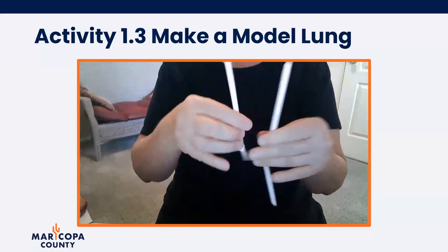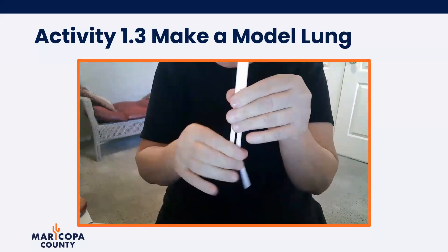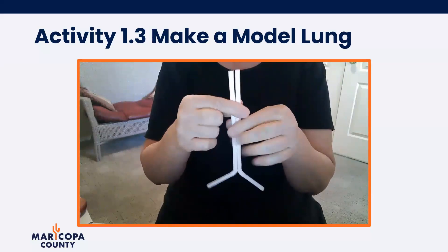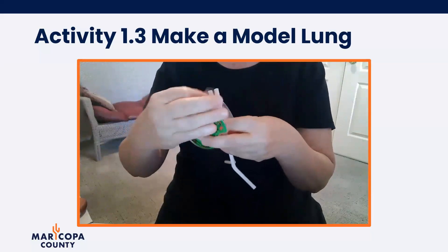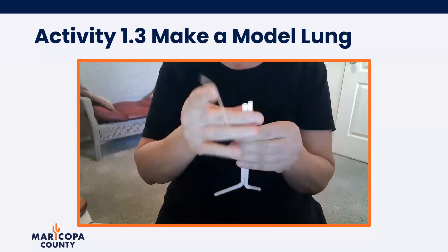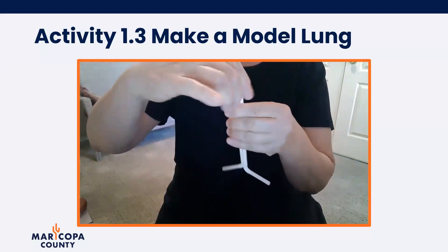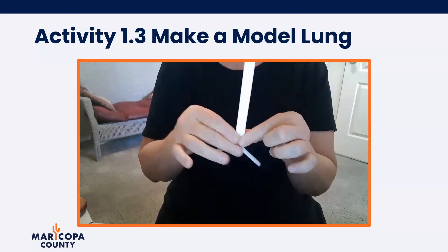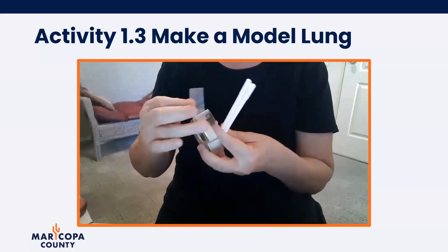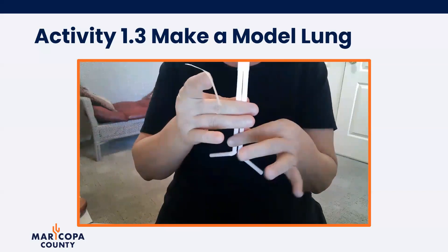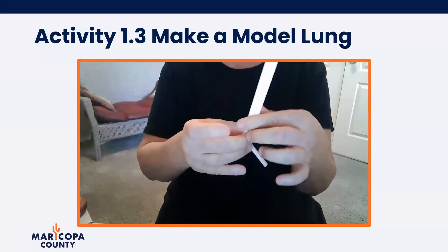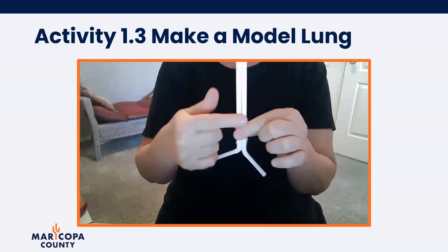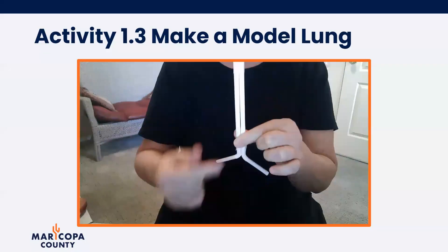Take the two straws with the bendable ends and put them together with the bendable ends pointing down. Pull those out so you have what looks like an upside down Y. Now take the tape and tape them together nice and secure — tape them in two spots, one piece at the very top and another down where the upside down Y part begins. So now you've formed the trachea or windpipe, which goes down and branches off into what will be our lungs.